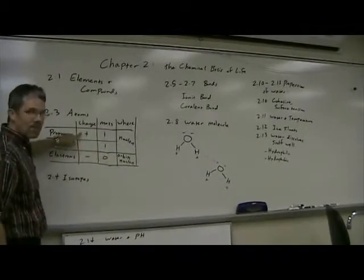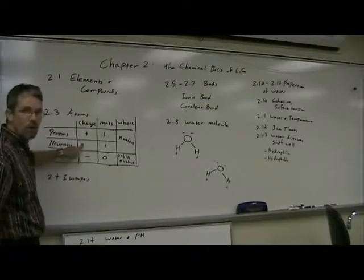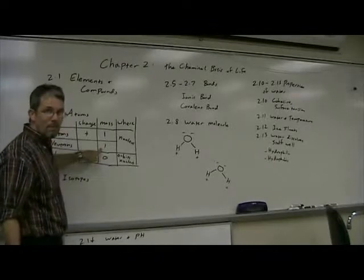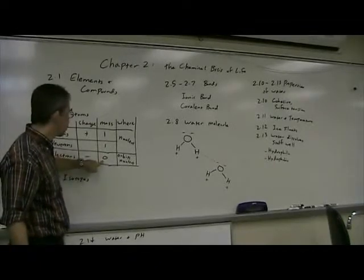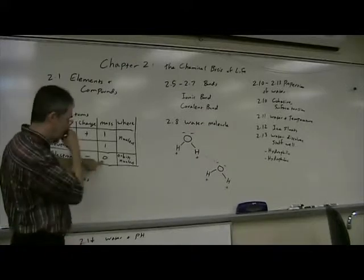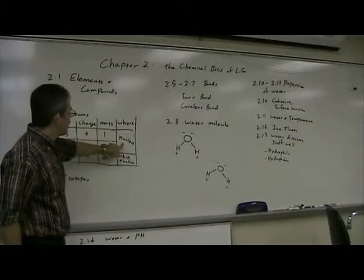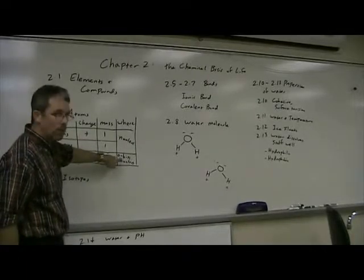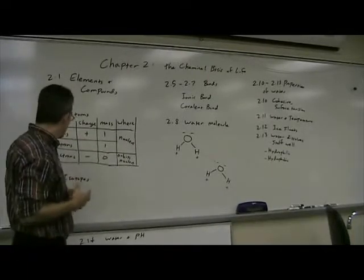Protons have a positive charge, electrons have a negative charge, neutrons are neutral. Both protons and neutrons have an atomic mass of one each. Electrons are said to have zero mass. They actually have a mass, but it's much, much smaller than a proton or neutron. Protons and neutrons are found in the middle of the atom, the atomic nucleus, whereas the electrons orbit the nucleus in various levels.